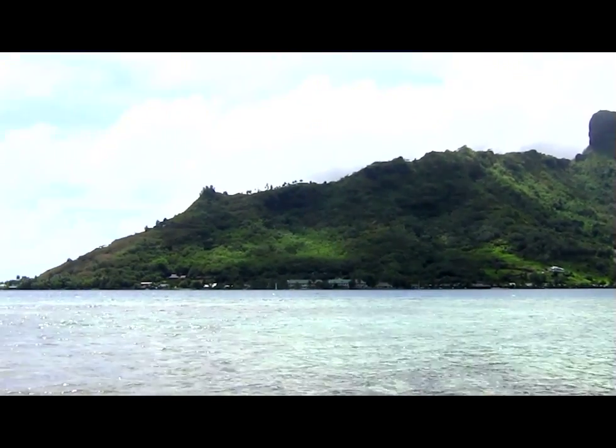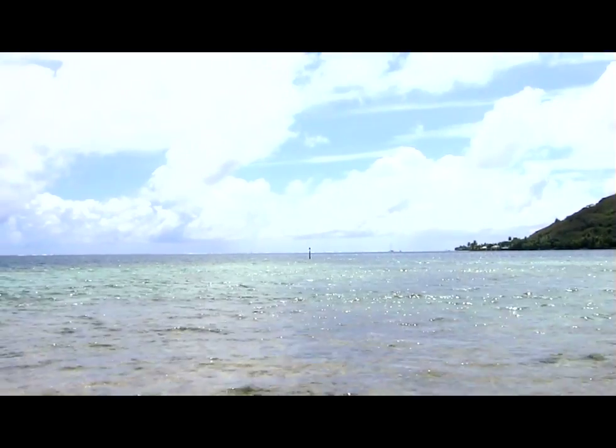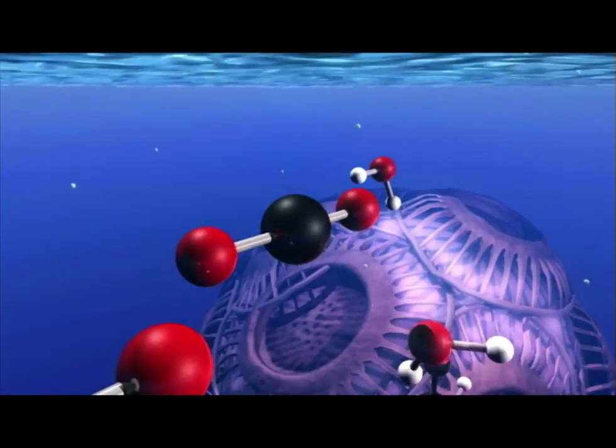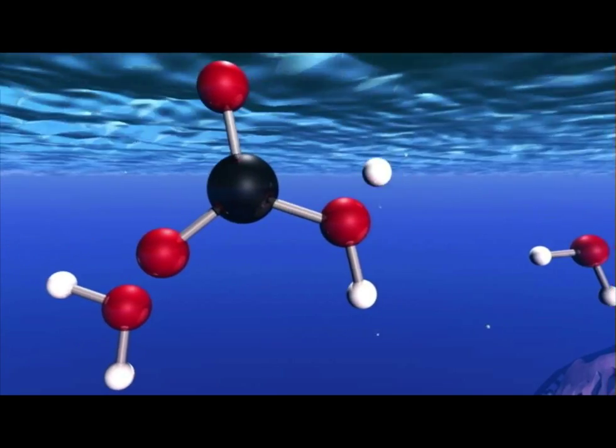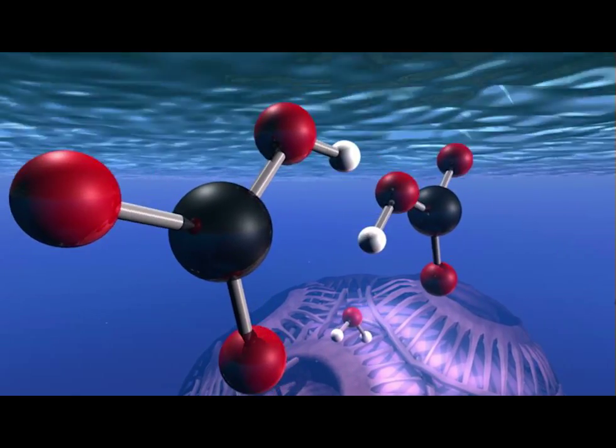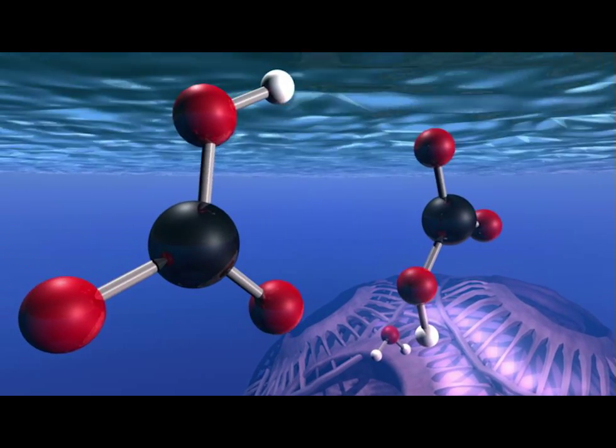The ocean's biological carbon pump helps regulate atmospheric carbon by trapping it in the ocean's depths. On the ocean's surface, carbon dioxide in the air reacts with water to form carbonic acid. Carbonic acid dissociates into hydrogen ions and an important ion called bicarbonate.